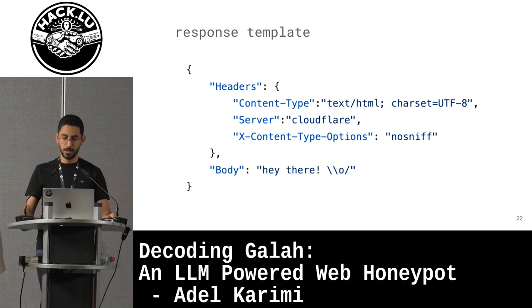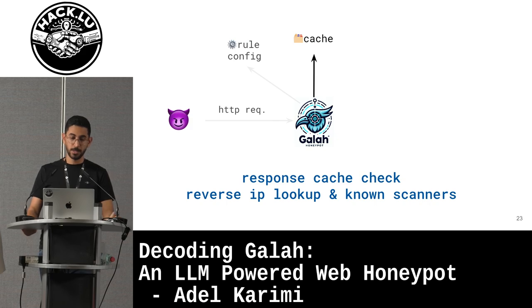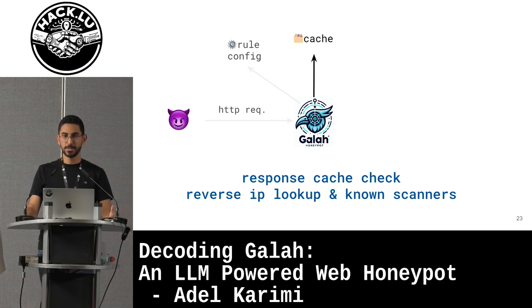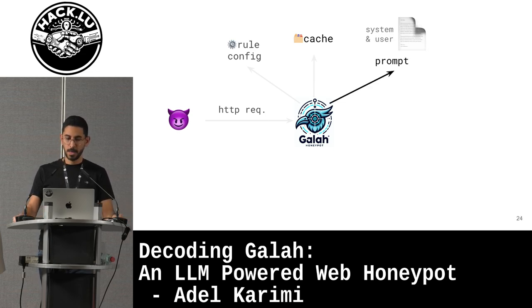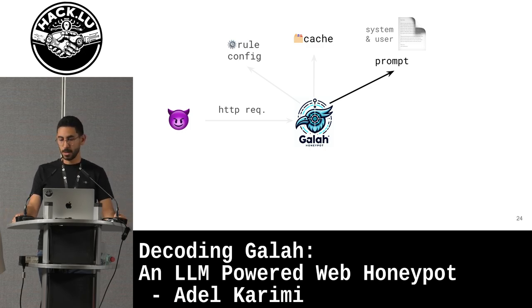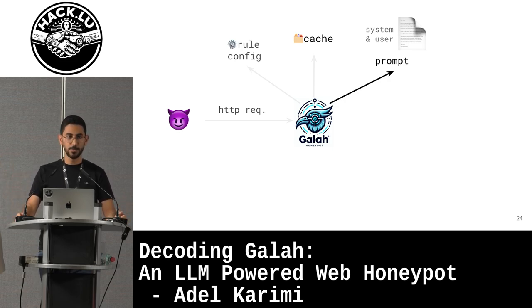If the request doesn't match with any rules in the rule configuration system, the next step is to check the cache. I added this because I didn't want to waste money generating multiple responses for the same identical request. If the request doesn't match anything in the cache or the cache response has expired, then we go to the next level — the main part of this honeypot. We have a huge prompt divided into a system prompt and a user prompt.